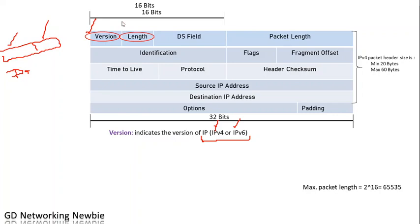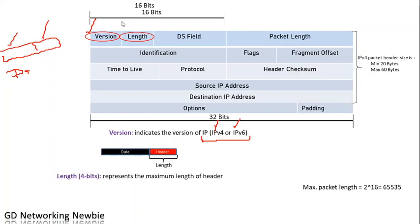Then we have the IHL (Internet Header Length) field. This field is 4 bits in length and represents the maximum length of the header. Since it is 4 bits, the maximum possible value is 2 raised to the power of 4, and whatever that answer is represents the maximum size of the header.